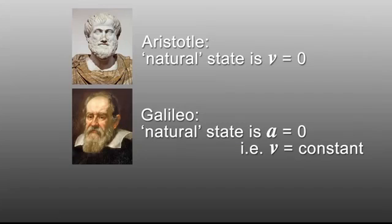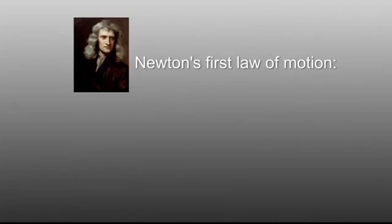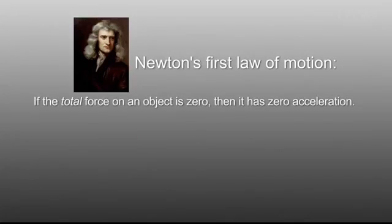This was a revolutionary idea. For Aristotle, ordinary objects tended to stop — their natural state was zero velocity. For Galileo, the natural state is zero acceleration, i.e. constant velocity. This is formalized in Newton's first law: if the total force on an object is zero, then it has zero acceleration.